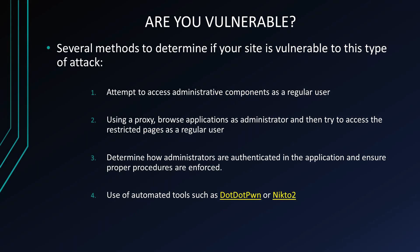Are you vulnerable? There are several methods to determine if your site is vulnerable. Attempt to access administrative components as a regular user — don't log in as the admin, just try to reach known administrative functions as a standard user. You can also use a proxy, browse as the administrator, and then try to access those restricted pages as a regular user. You can determine how administrators are authenticated in the application and ensure proper procedures are enforced. Automated tools are also available, such as dotpwn and NMAP NIC-22.